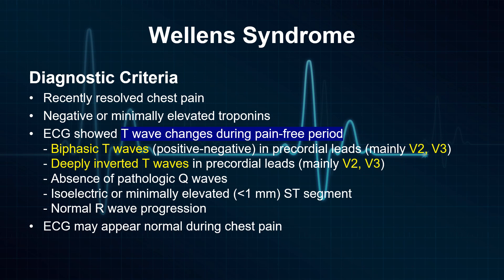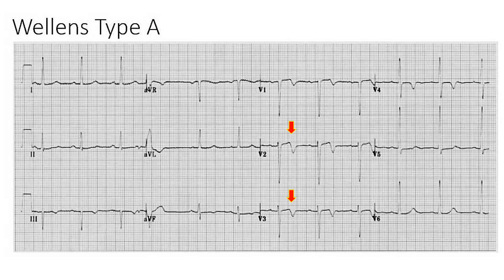Note that the ECG may appear normal during the chest pain period. Type A Wellens syndrome features biphasic T-waves, where the initial deflection is positive followed by a negative deflection, noted in the precordial leads, particularly V2 and V3.